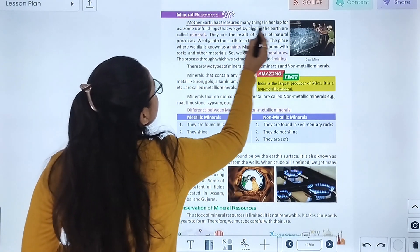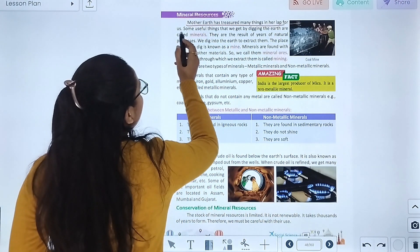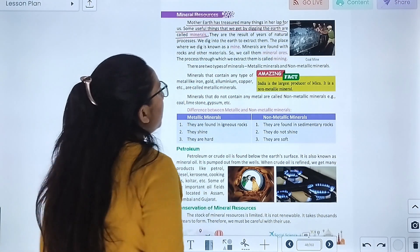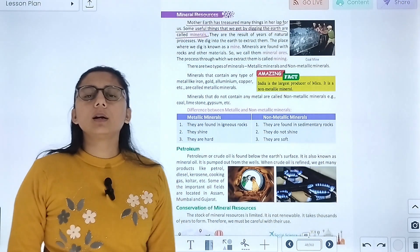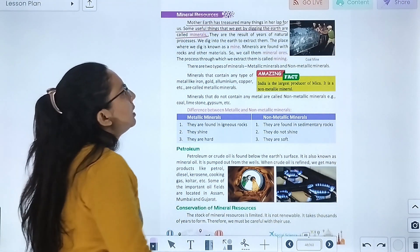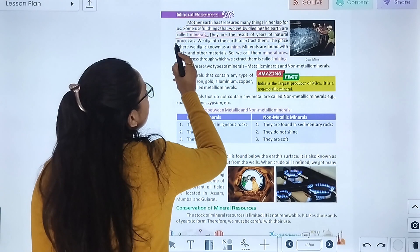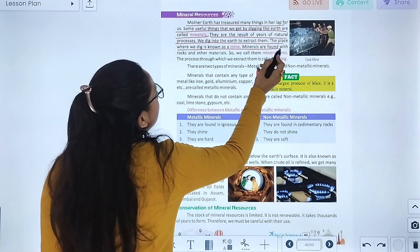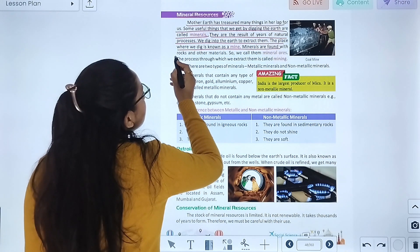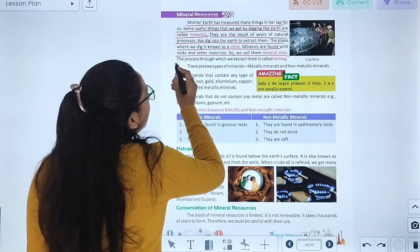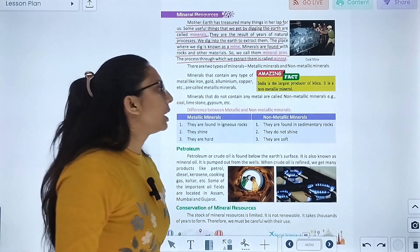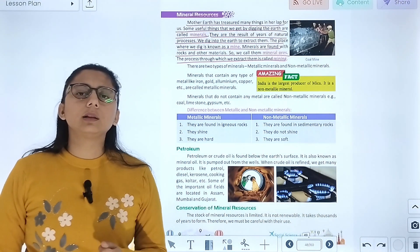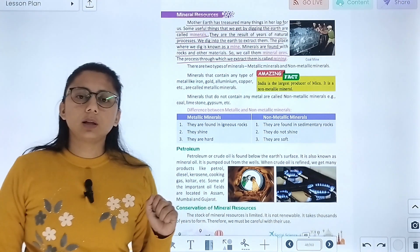Mineral resources. Mother Earth has treasured many things in her lap for us. Some useful things that we get by digging the earth are called minerals. They are the results of years of natural processes. We dig into the earth to extract them. The place where we dig is known as a mine. Minerals are found with rocks and other materials, so we call them mineral ore. The process through which we extract them is called mining.